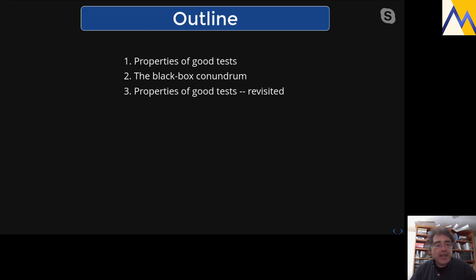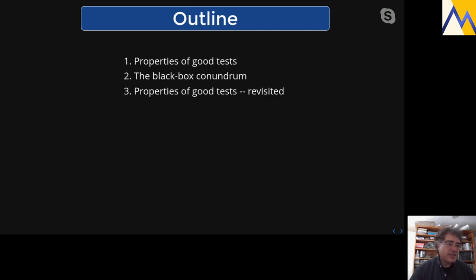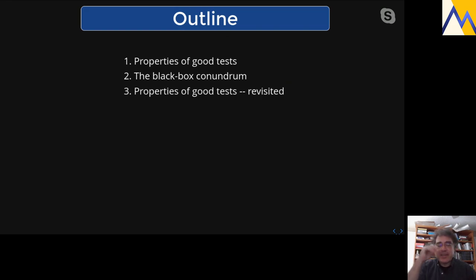The black box conundrum is the issue that the talk pivots around. Part one is a quick review of properties of good tests — what properties would you like your unit tests to have? The black box conundrum comes out of that. If you're new to unit testing, that section may be useful in itself, and I've got links to some much better talks if you're interested.